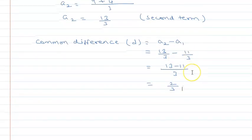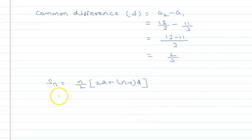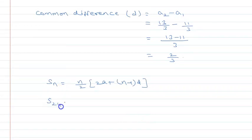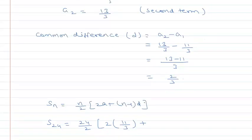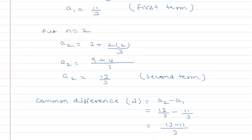I need sum of 24 terms. Sn formula is n/2 × [2a + (n-1)d]. S24 = 24/2 × [2a, where a is 11/3, the first term.